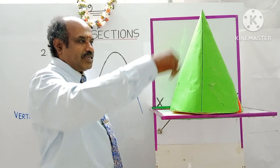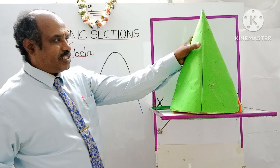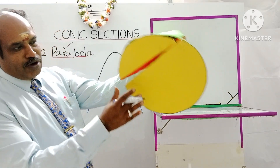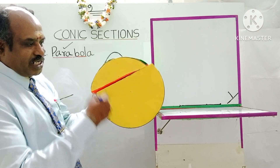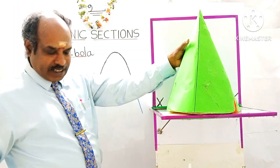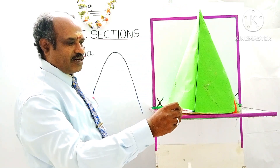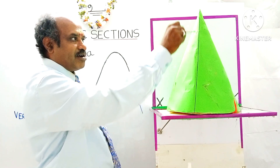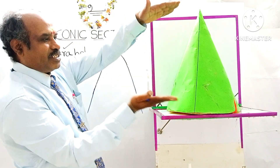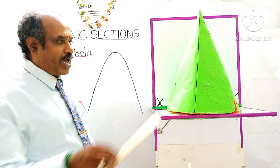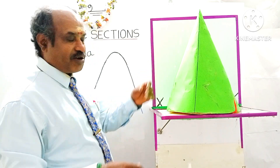A cone is taken. The topmost corner is called the apex. The base, shown in yellow, is circular in shape. Now I am going to cut this cone along a line connecting the apex and a point on the circumference of the base — this inclined line is called the slant length or slant height. When I cut this cone parallel to the slant length, a shape is obtained — that will be the formation of a parabola.